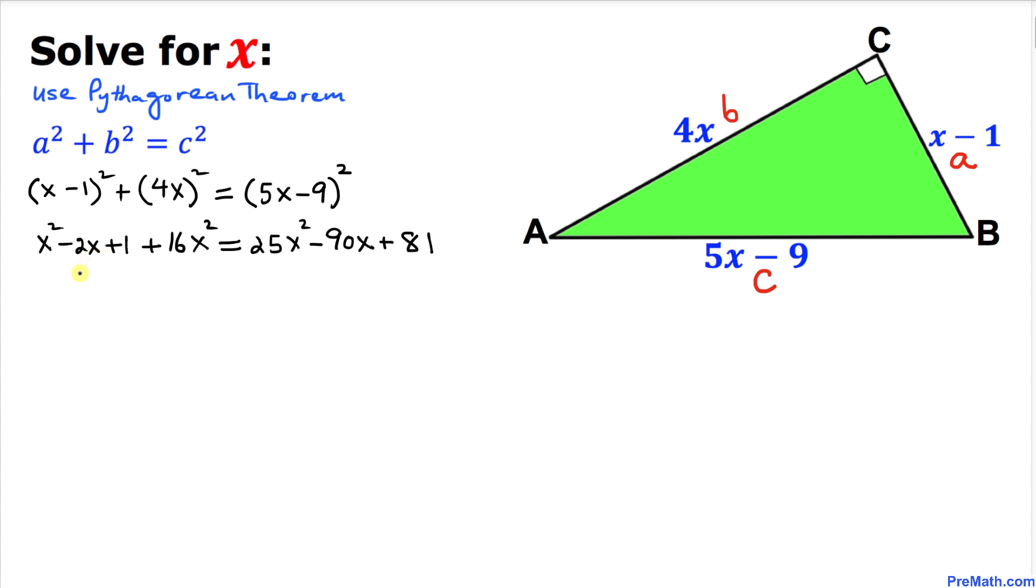Now let's combine the like terms on the left hand side. That's going to become 17x squared minus 2x plus 1, and the right hand side we're going to leave everything as it is: 25x squared minus 90x plus 81.